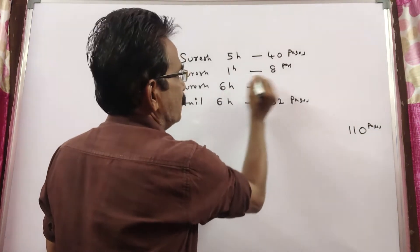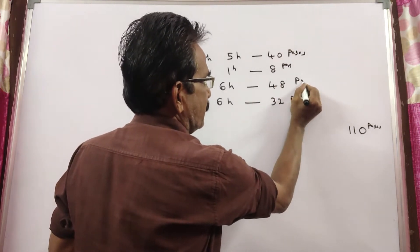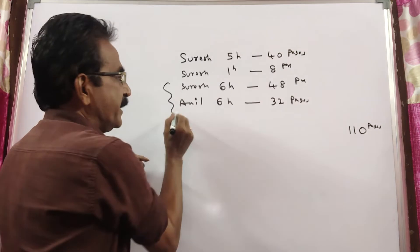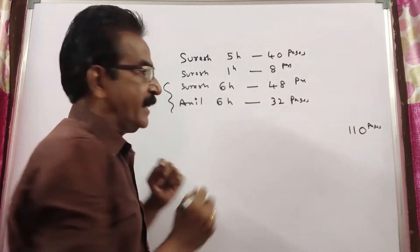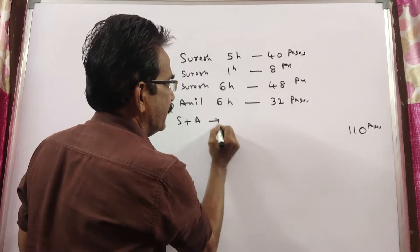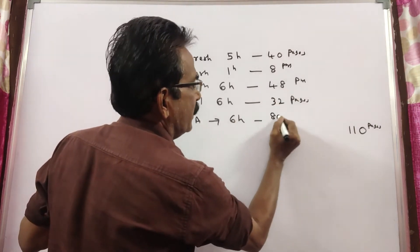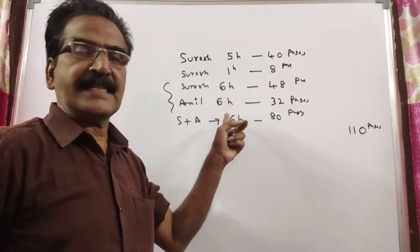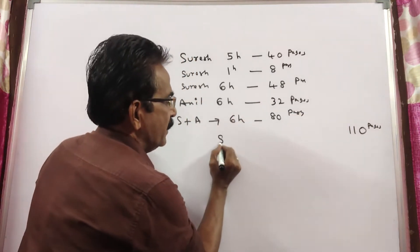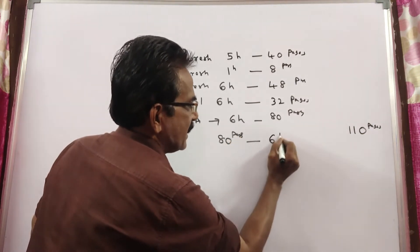In 6 hours, Suresh can type 6×8 = 48 pages. So if Suresh and Anil work together, they can type 48+32 = 80 pages in 6 hours.